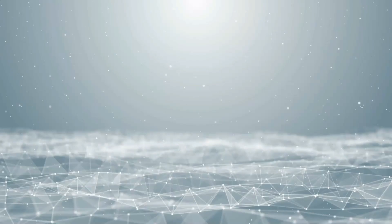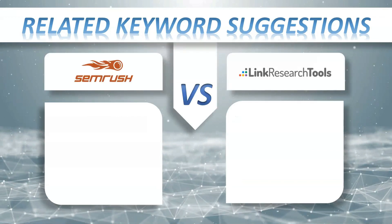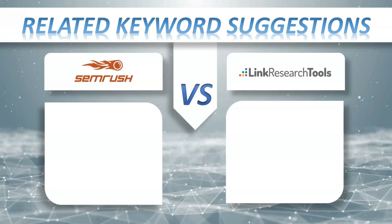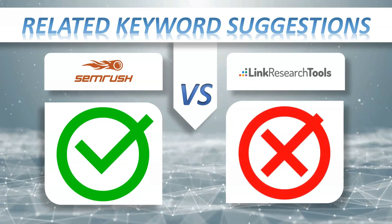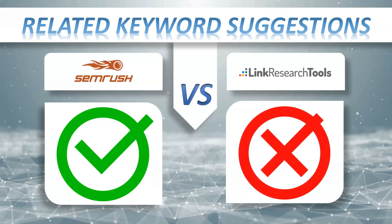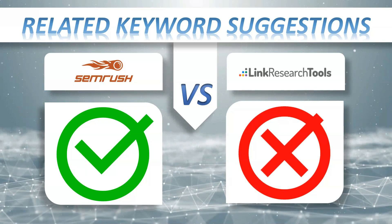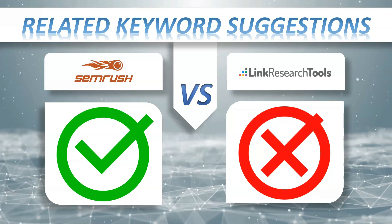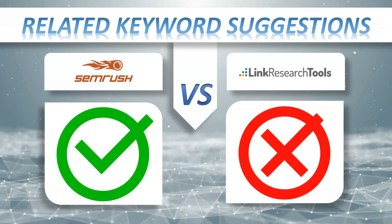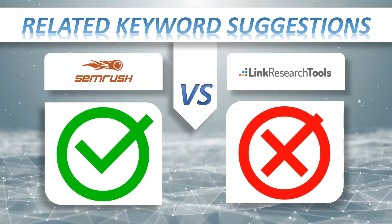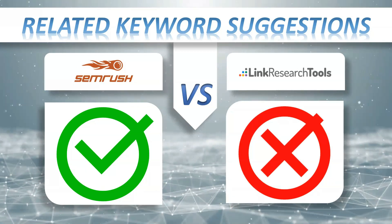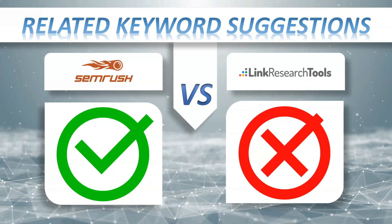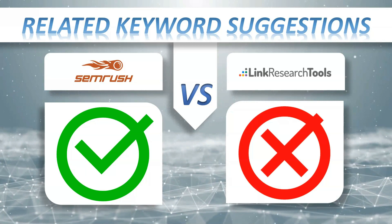Related keyword suggestions: SEMrush plus, Link Research Tools no. The easiest way to achieve clients is to find out what your potential customers or readers are searching for on Google and create content on your website around these topics. Imagine how your business would benefit if you could analyze search trends, find search terms related to your business domain, and customize content to serve the actual needs of your customers.